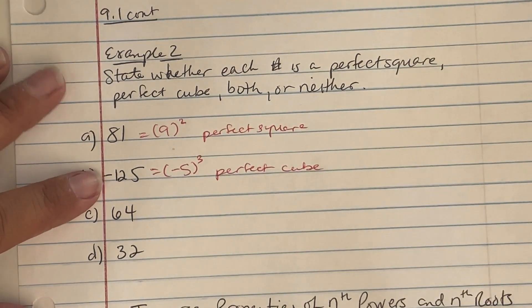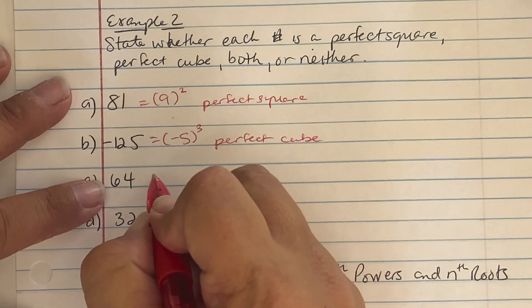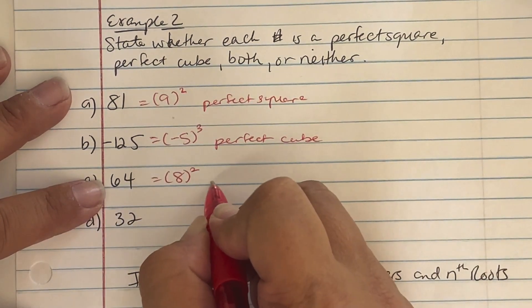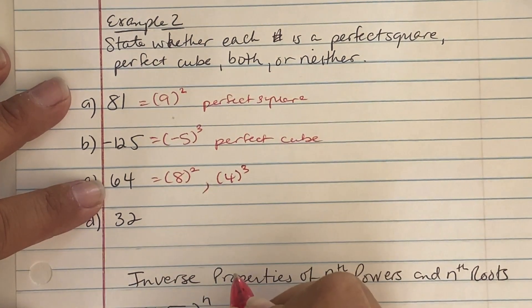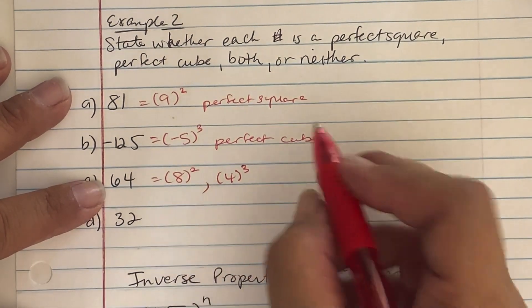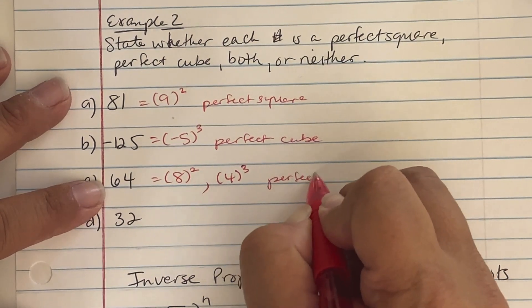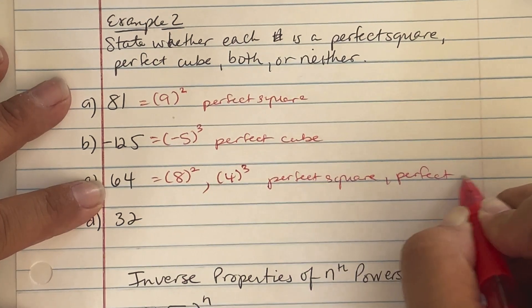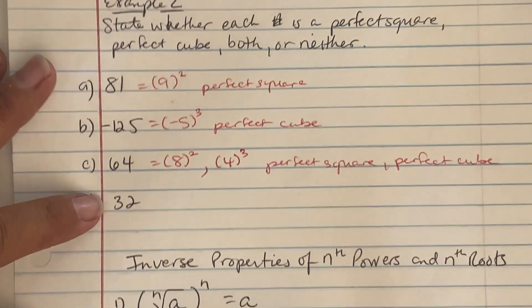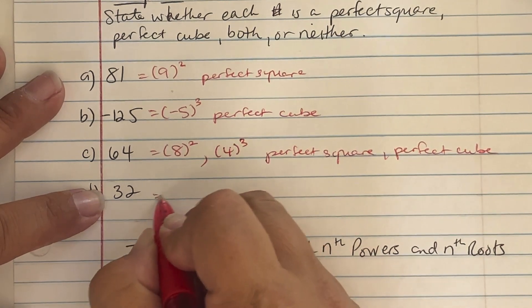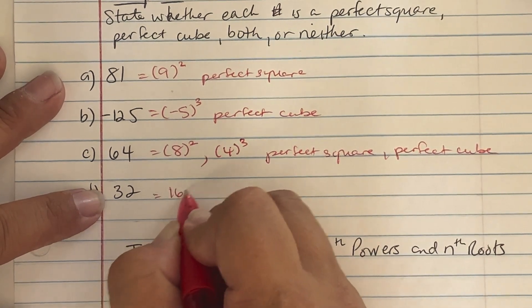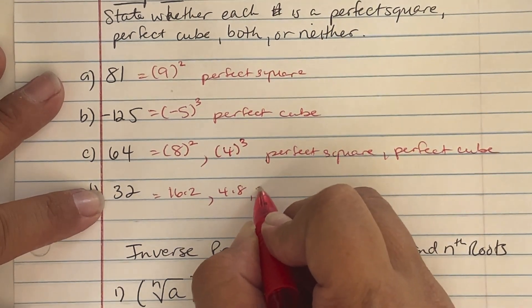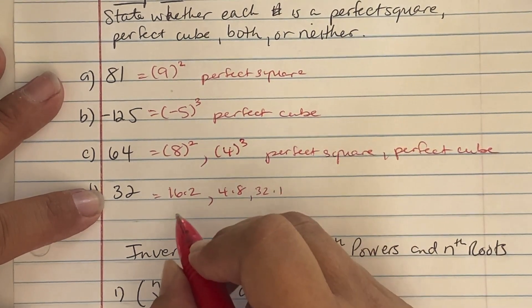The number 64 can be written as eight squared, which gives 64, as well as four cubed, which is also 64 — so it's both a perfect square and a perfect cube. The number 32 is only 16 times two, or four times eight, or 32 times one. It is never twice a number or three times a number repeated, so this is neither.